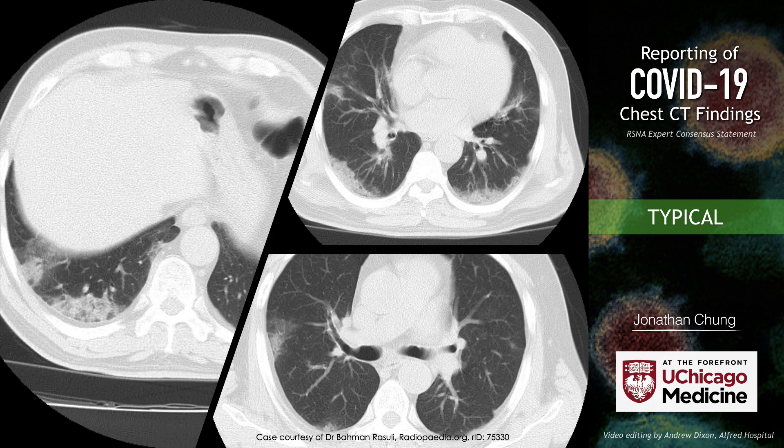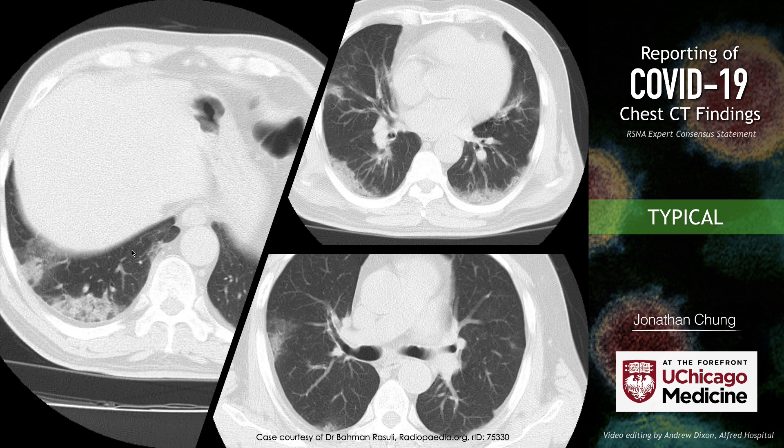Another example from Radiopaedia — there are multiple examples in the Radiopaedia case file of COVID-19, and I encourage you to look there. Bilateral ground glass opacity, a little asymmetric, with some superimposed consolidation as well — typical imaging appearance. Here's a patient with left lower lobe consolidation and ground glass opacity.